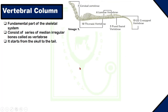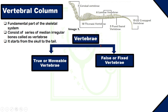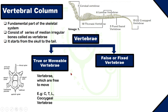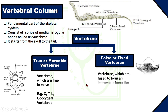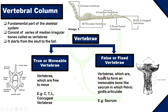Now, the vertebral column. The vertebral column is the fundamental part of the skeletal system of vertebrate animals — vertebrate animals are those animals which have a vertebral column. The vertebral column consists of a series of median irregular bones called vertebrae, and it extends from the base of the skull to the tail of the animal. There are two types of vertebrae: true vertebrae and false vertebrae. True vertebrae are the movable vertebrae which are free to move, including cervical, thoracic, lumbar, and coccygeal vertebrae. False vertebrae are fixed vertebrae which are fused to form an immovable bone like the sacrum in the pelvic girdle.